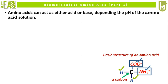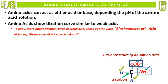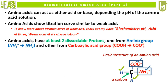Amino acids can act as either acid or base, depending on the pH of the amino acid solution. Amino acids show a titration curve similar to a weak acid. Amino acids have at least two dissociable protons: one from the amino group, where NH3+ can donate a proton and get converted to NH2, and another from the carboxylic acid group, where COOH can donate a proton and get converted to COO−.